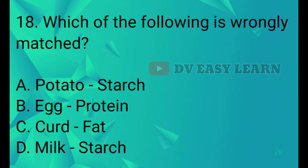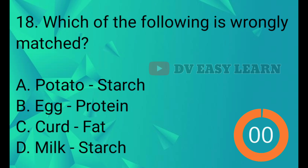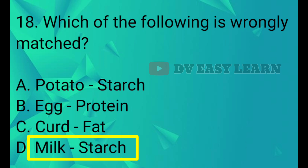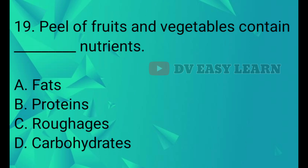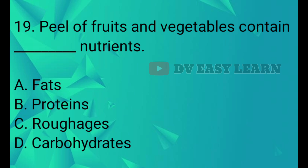Q18. Which of the following is wrongly matched? Answer: Milk — Starch. Q19. Peel of fruits and vegetables contains what nutrients? Answer: Roughage.